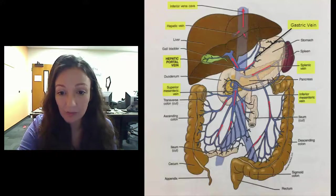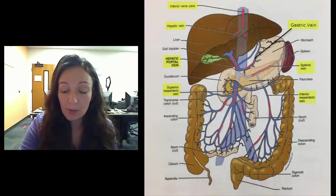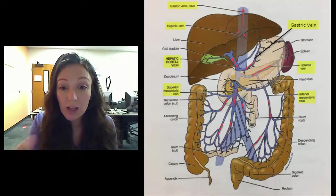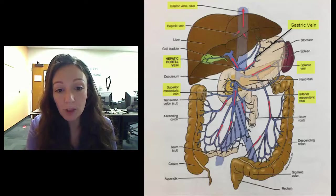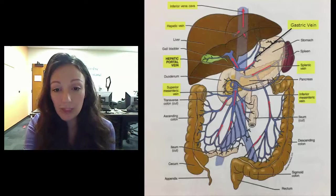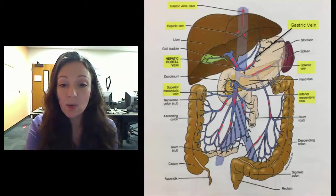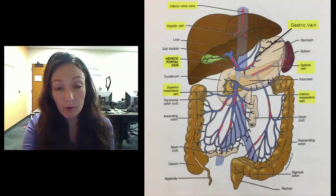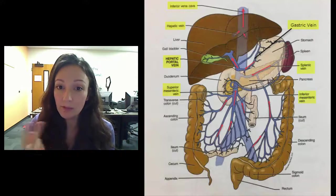So what we want to do instead is we want to take this blood from these organs through these veins. So here through the splenic vein, through the gastric vein, through the mesenteric veins, and we're going to collect all of it in one spot. We're going to collect it in this hepatic portal vein. And this vein is going to take us into the liver where we have our second capillary bed giving us our portal system.